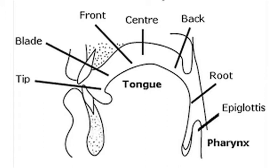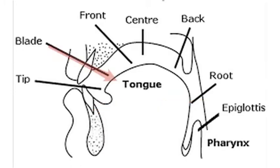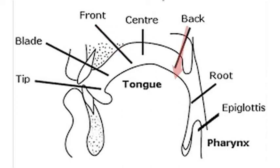It may take many different positions which are very important for speech production. For articulatory description, it is convenient to divide the tongue into a number of parts. When the tongue is in the position of rest, its tip is just behind the lower teeth. The part of the tongue lying just opposite to the teeth ridge is called the blade. The part against the hard palate is called the front, and the part against the soft palate is called the back.